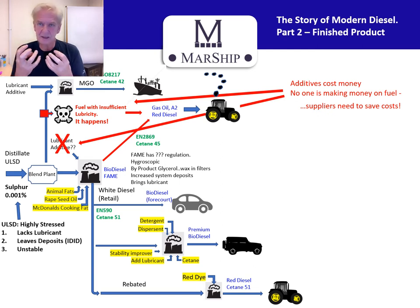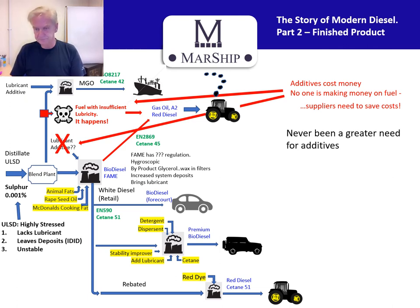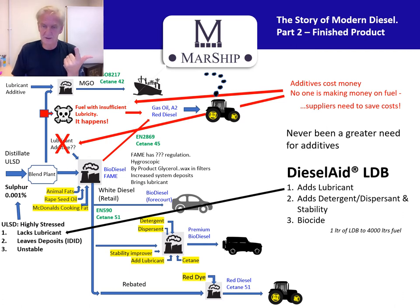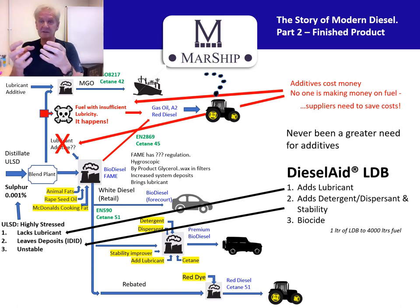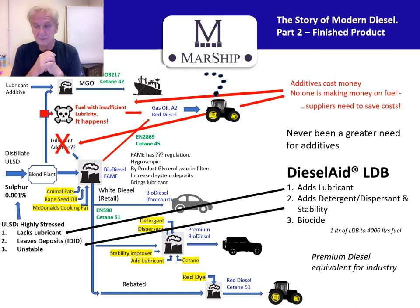Also, no one is making money from fuel — the margins are very low — so additives are a cost. They put the absolute bare minimum in. In our view, there has never been a greater need for additives than there is now. Here at Marship we have our own UK-manufactured product: Diesel Aid LDB. It has a lubricant, a detergent, and a biocide. The lubricity counters the lack of lubricant from the distillate; the detergent, dispersant, and stability additive help delay oxidation and degradation. We also include a biocide because of all the water that collects at the bottom of the tank — to kill what we call diesel bug. It's essentially premium diesel for industry.